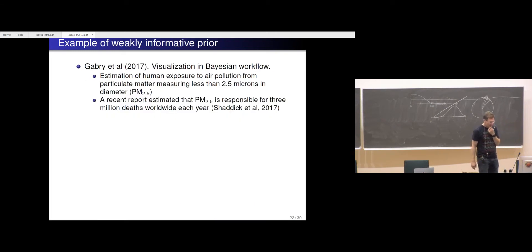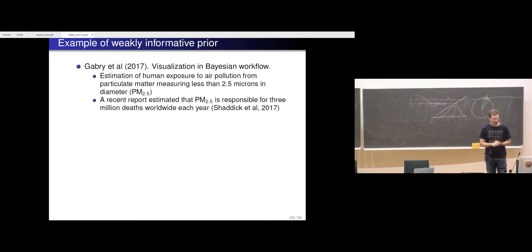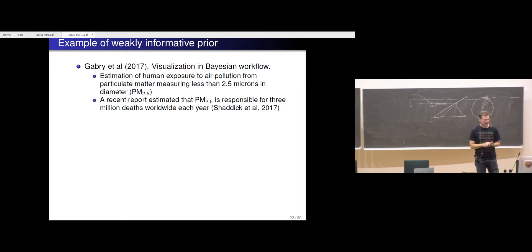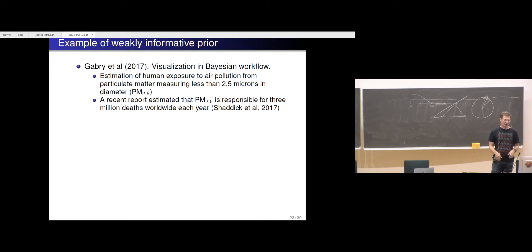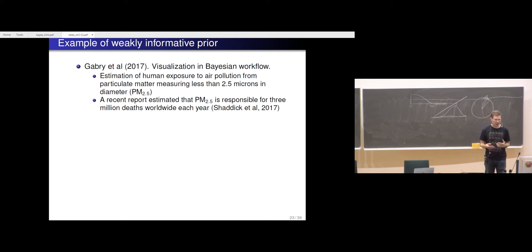Another example — from our paper on visualization and Bayesian workflow — is estimating human exposure to air pollution from particulate matter measuring less than 2.5 microns in diameter (PM2.5). These particles are small enough to coat the lungs and affect health. In regions with more of this pollution, people die younger. A recent report estimated that this pollution is responsible for 3 million deaths worldwide each year.